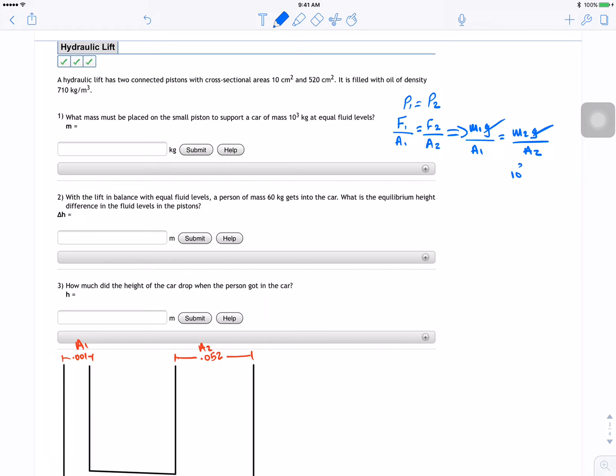So M2 is 10 to the power 3 divided by 0.052 will be equal to M1 divided by 0.001 meters. And from there M1 was equal to, what did I get for this guy, I got 19.23 kilograms.